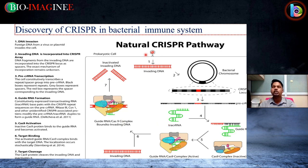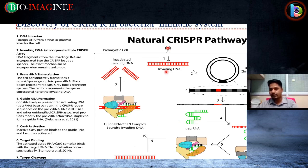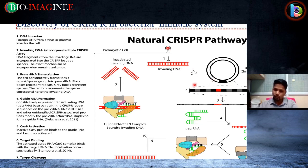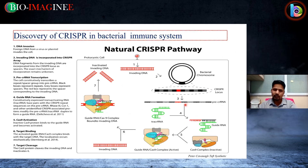The idea of the CRISPR-Cas9 system arose from this natural pathway. When viral DNA comes in, the bacterial system detects it as foreign DNA. Using the same approach synthetically, we can incorporate our desired DNA along with this system. In that way, we can create indel mutations, knockout studies, or whatever type of gene editing we want to do.